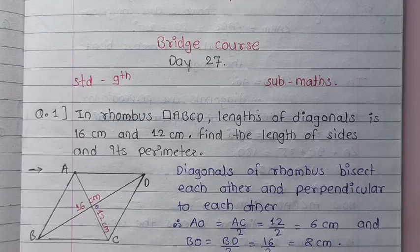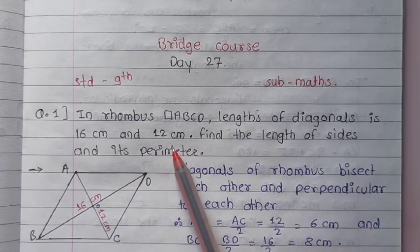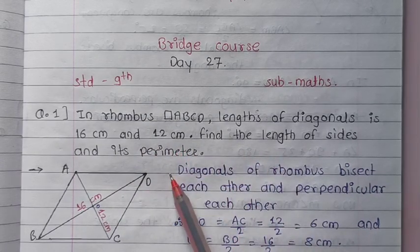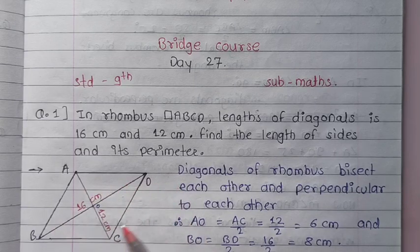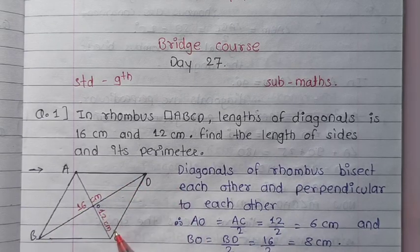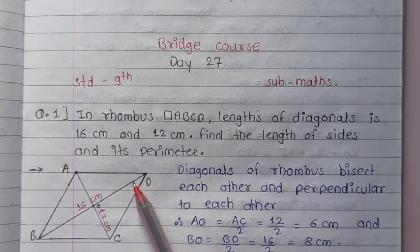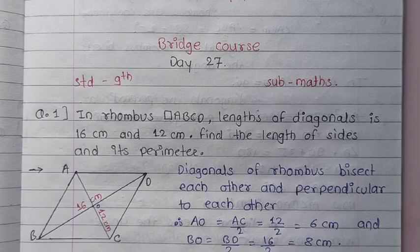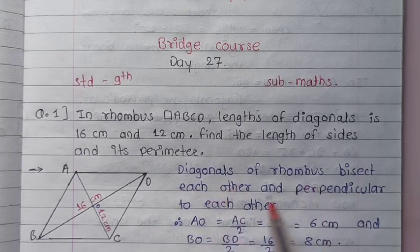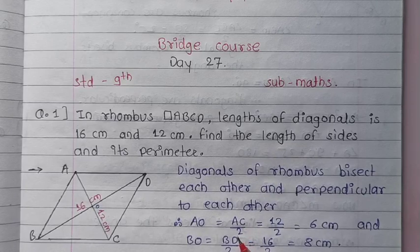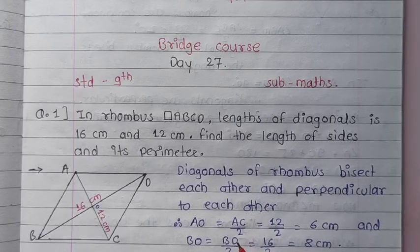Question 1: In rhombus ABCD, the length of the diagonals is 16 cm and 12 cm. Find the length of the sides and its perimeter. The diagonals of a rhombus bisect each other and are perpendicular to each other — this is a property of the rhombus.